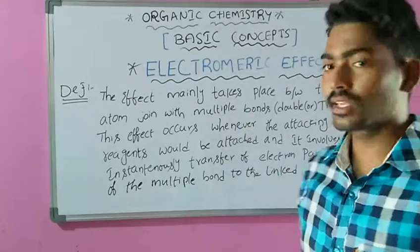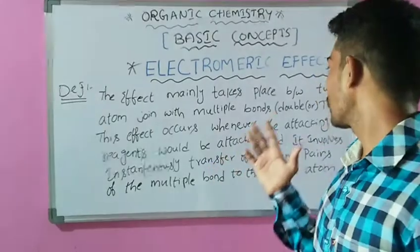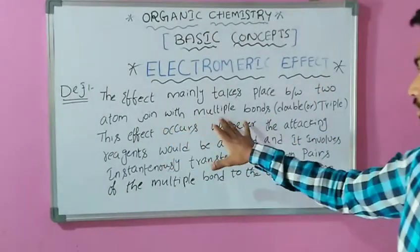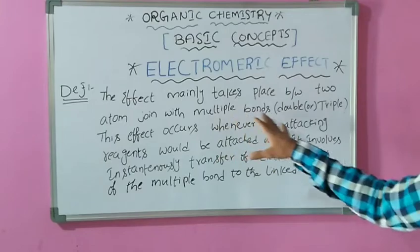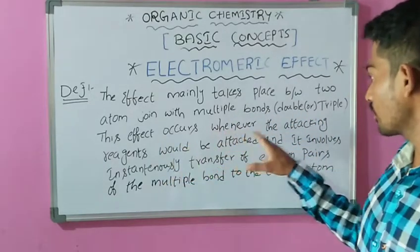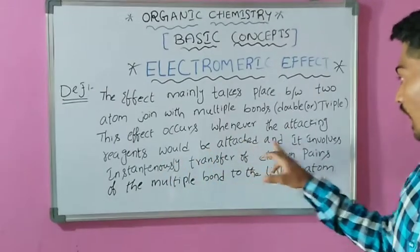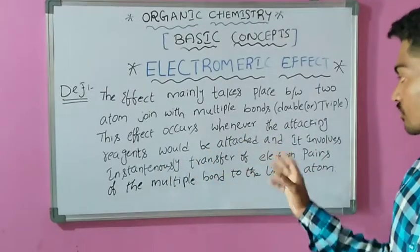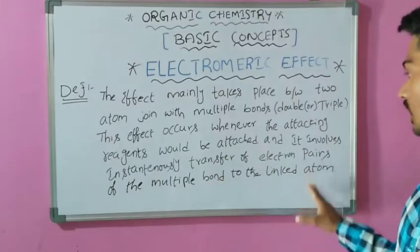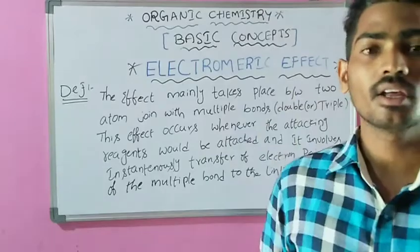What is the Electromeric effect? This effect mainly involves or takes place between two multiple atoms, that is multiple bonds — there is a double or triple bond. This effect mainly occurs whenever the attacking reagents would be attached, and it involves instantaneous transfer of electron pairs of the multiple bonds to the linked atoms. This is the scientific definition of the Electromeric effect.